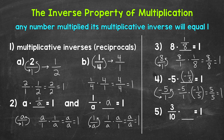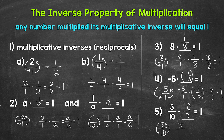Number 5: 3 tenths times what equals 1? Find the multiplicative inverse or reciprocal of 3 tenths — flip the fraction and we get 10 thirds. So 10 over 3 is the multiplicative inverse of 3 tenths. Multiplying 3 tenths times 10 thirds straight across — numerators: 3 times 10 equals 30; denominators: 10 times 3 equals 30. So 30 over 30 equals 1.